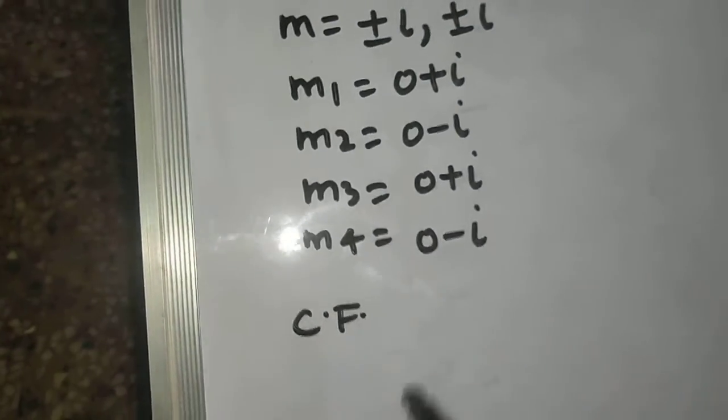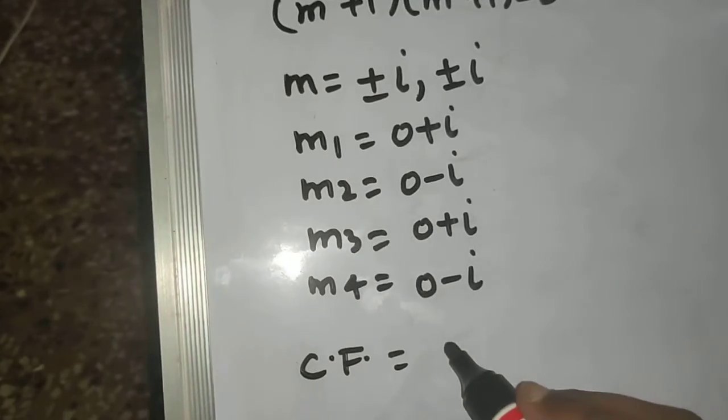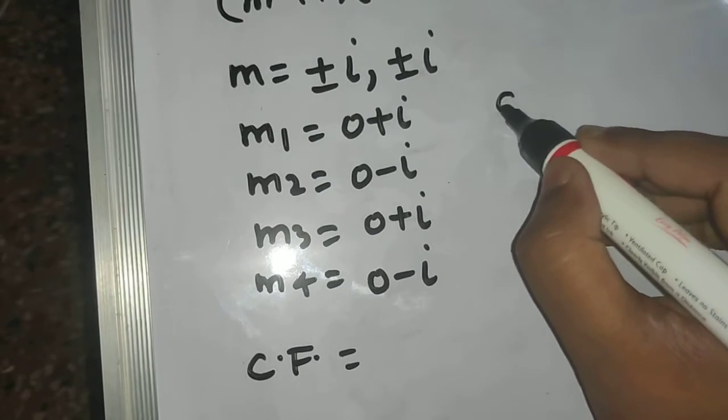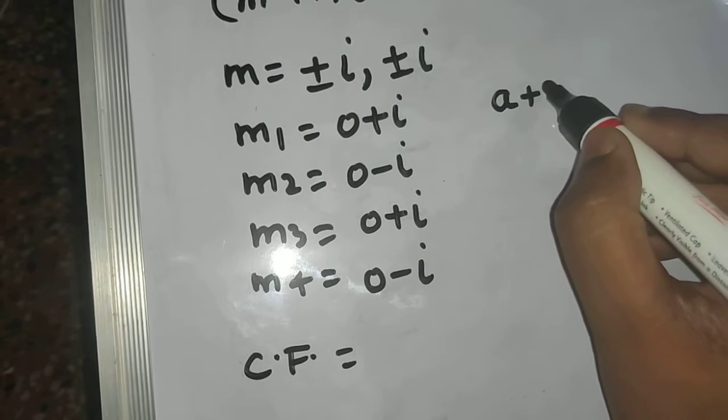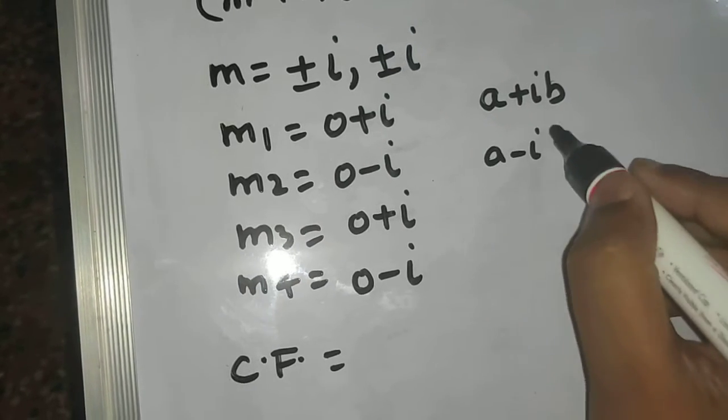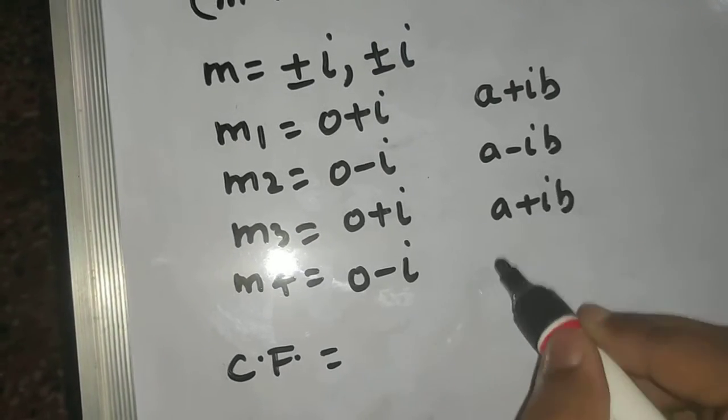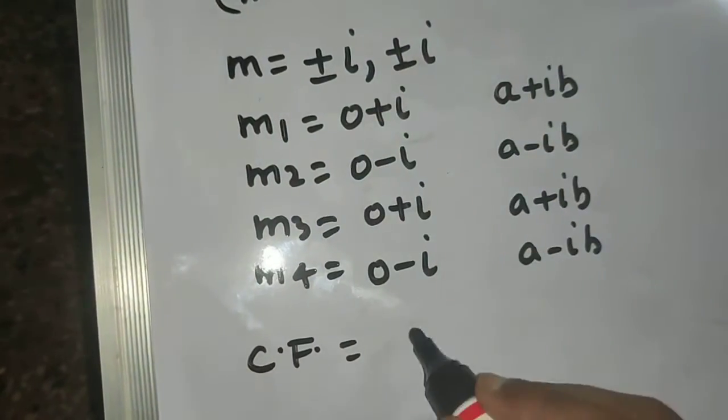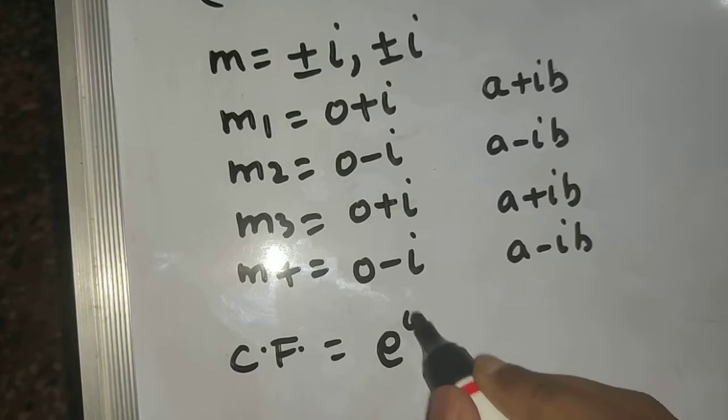So how to write complementary function in this type of question. So you will write e power ax. Now this all is of the form a plus iota b. This is of the form a minus iota b. Again of the form a plus iota b and a minus iota b. So a you can easily see is 0. So e power 0x.